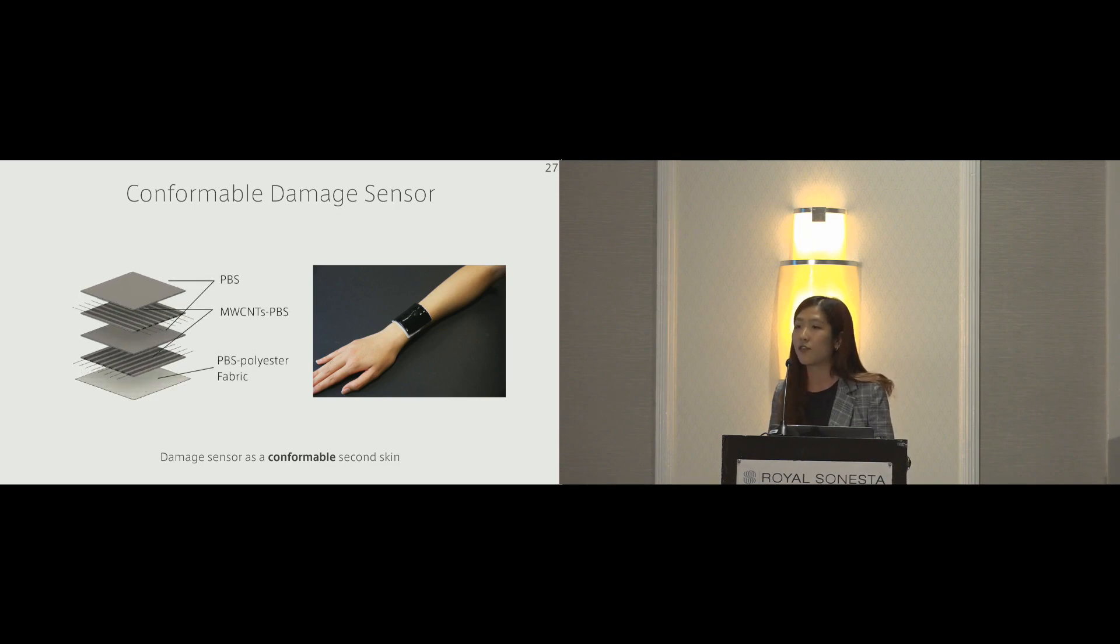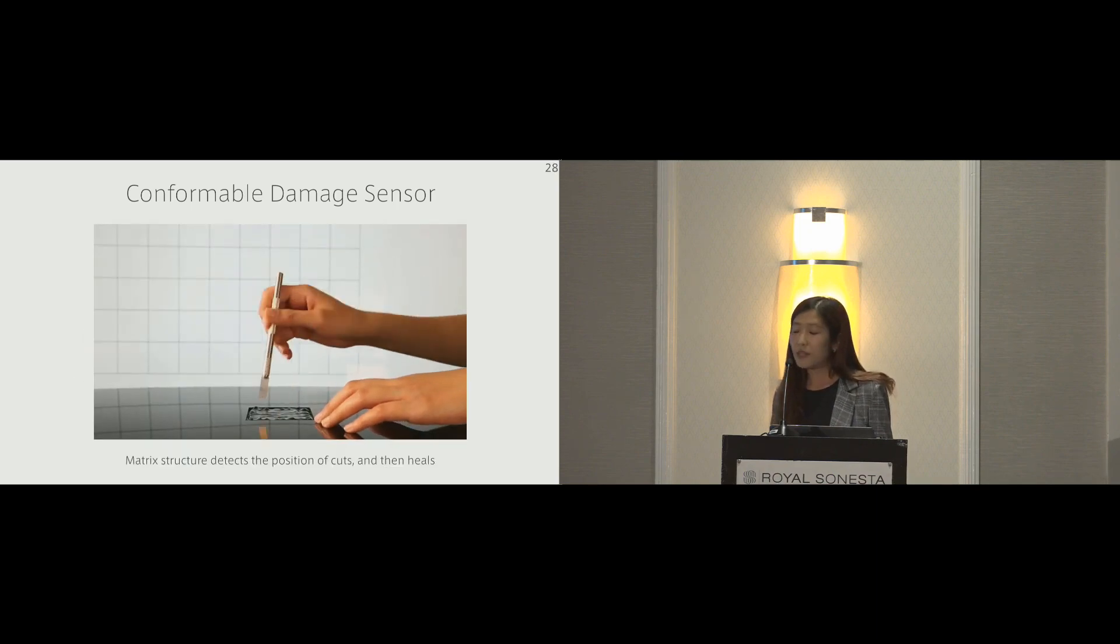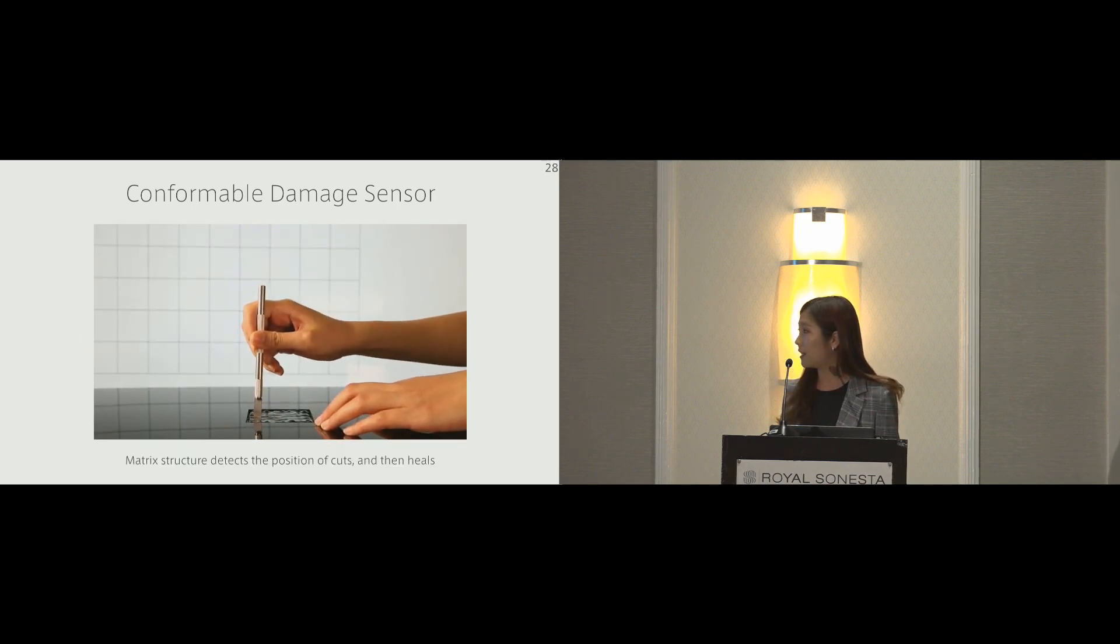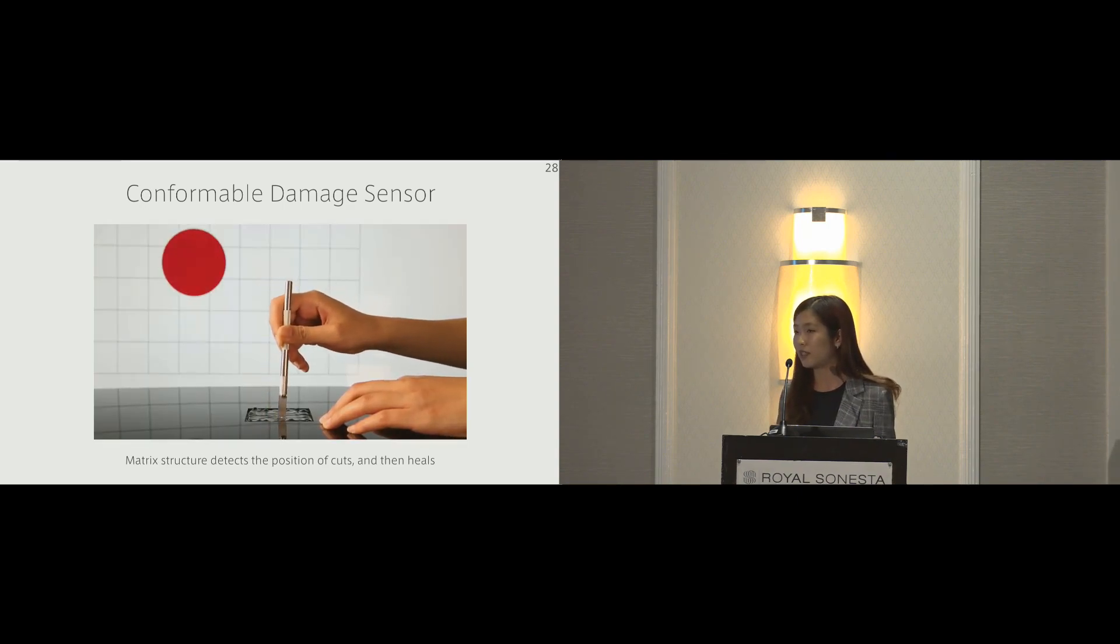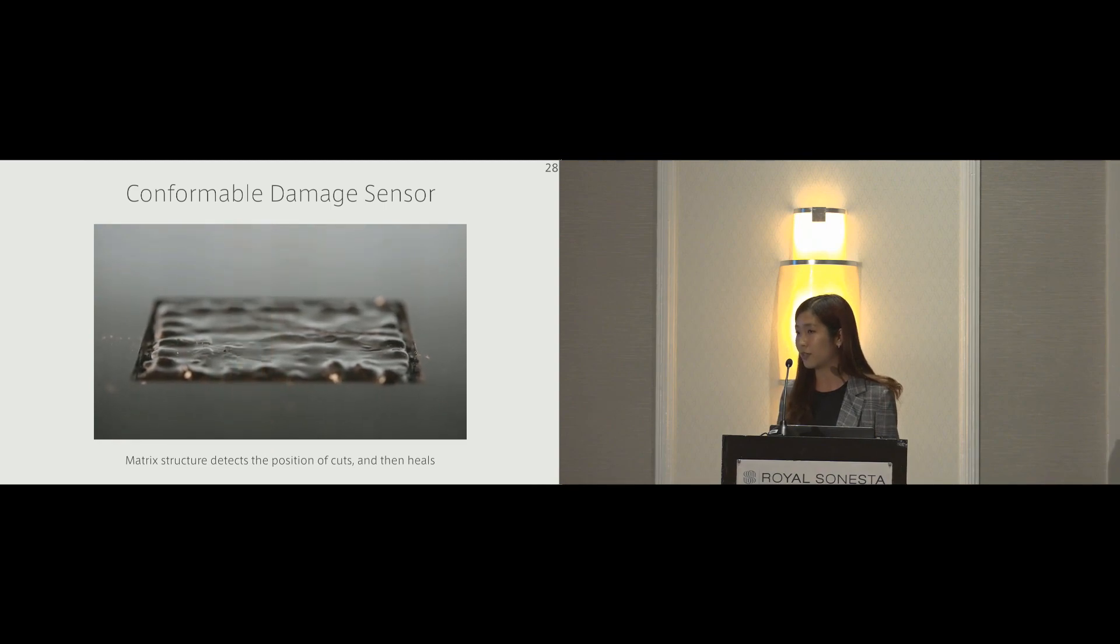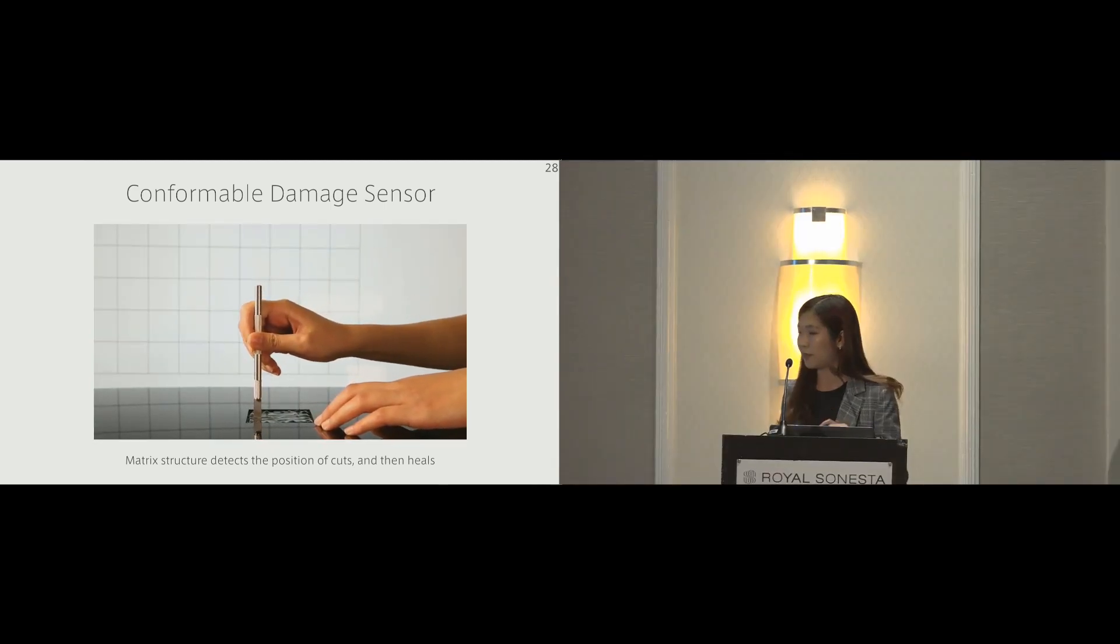Our second application is a conformable damage sensor. Imagine how your skin works - your skin can feel and sense where you have a damage, and then heal itself back. Inspired by how human skin works, we fabricate this damage sensor as a second skin. We use PBS fabric as the substrate, so it could stick to human skin really well. This damage sensor can detect different positions of cuts. It consists of a cut sensor matrix with the body using self-healing materials. You can cut this sensor and heal this sensor back.